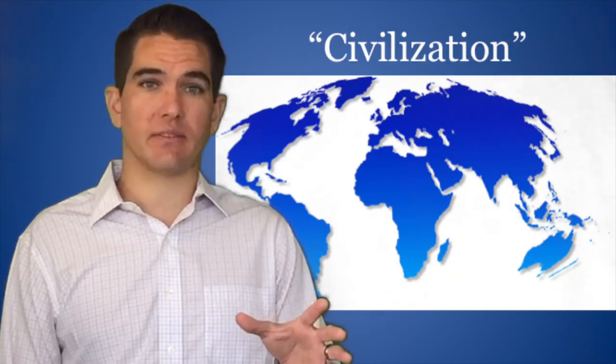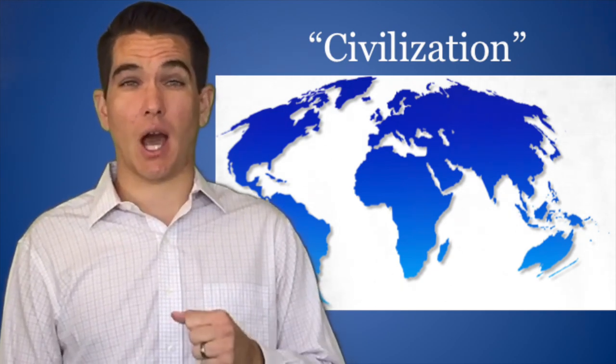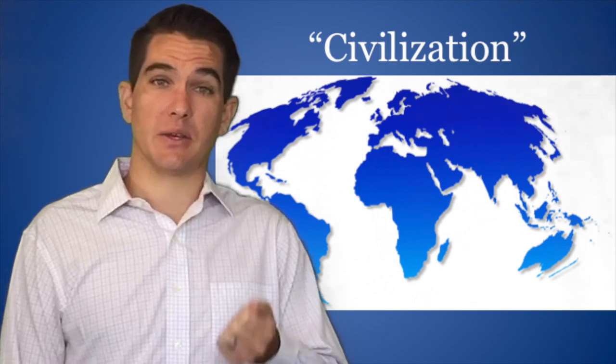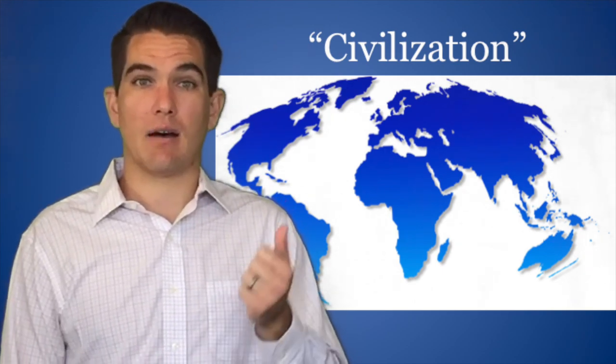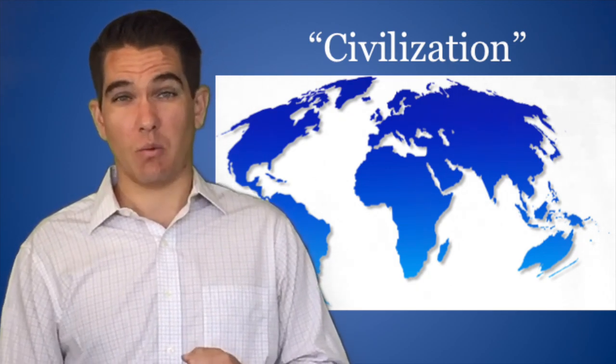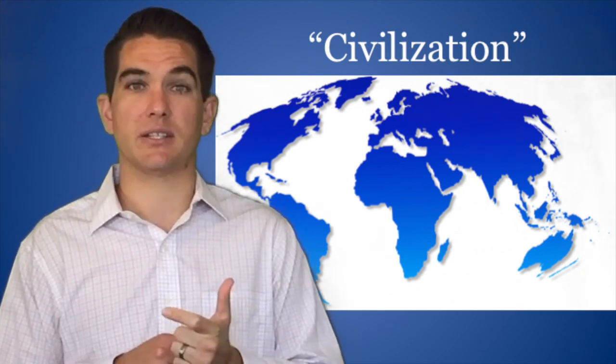All early civilizations were based in large cities, they had coercive governments, and they had really complex institutions. The idea of specialization of labor that came from the surplus of the agricultural revolution has become much more complex by about 5,000 years ago. We had really complicated religious hierarchies, political bureaucracies, and armies.